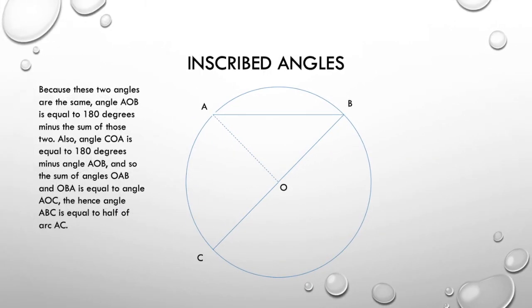Because these two angles are the same, angle AOB is equal to 180 degrees minus the sum of those two. Also, angle COA is equal to 180 degrees minus angle AOB. This is because they are supplementary. And so, the sum of angles OAB and OBA is equal to angle AOC. And hence, angle ABC is equal to half of arc AOC.